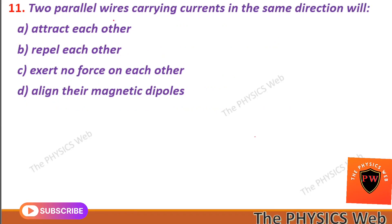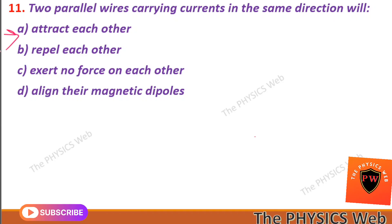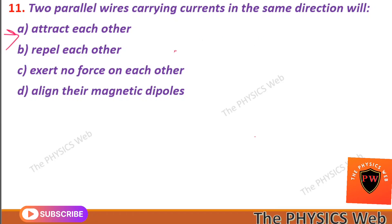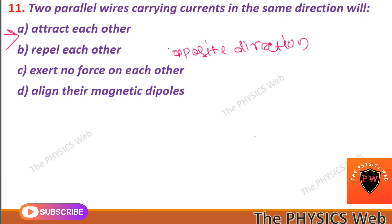Next, question eleven: two parallel wires carrying currents in the same direction will attract each other. So A is your correct option. And when they carry current in the opposite direction, they will repel each other.